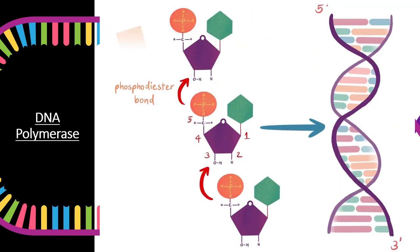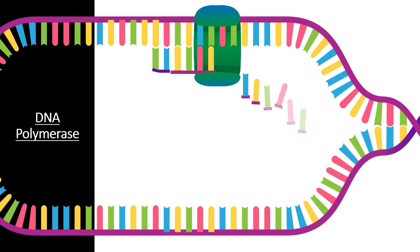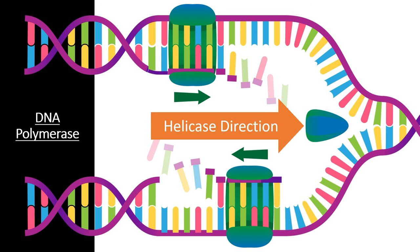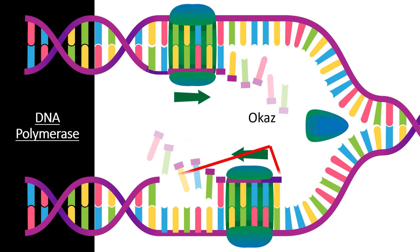DNA polymerase can only add nucleotides in the 5' to 3' direction — it can only catalyze the bond between the 3' hydroxyl group and the phosphate group attached to the 5' carbon of the new nucleotide. Since the two strands of DNA run anti-parallel, the two DNA polymerase molecules operate in different directions. The leading strand is created in the same direction that helicase is opening up the DNA, while the lagging strand is created in the opposite direction. While DNA polymerase on the leading strand can add nucleotides continuously, DNA polymerase on the lagging strand must continuously reattach to the newly opened template strand, creating a large number of Okazaki fragments instead of a single new strand.